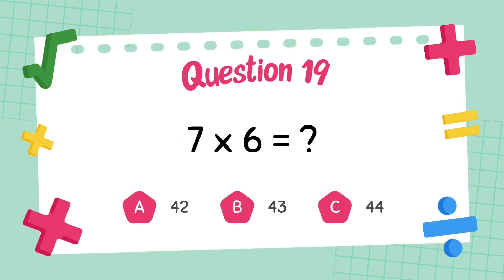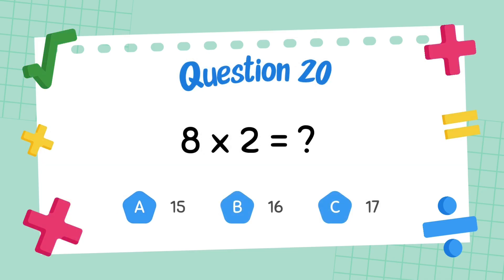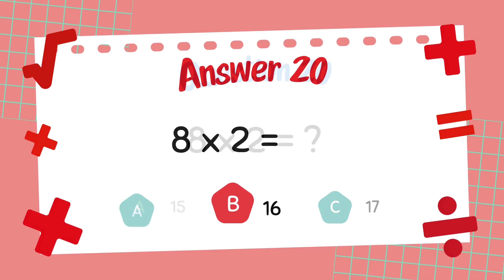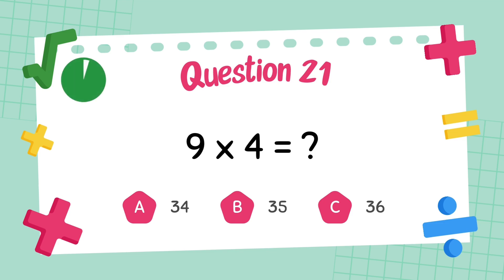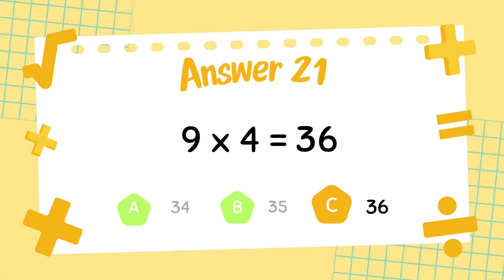What is seven multiply six? The answer is forty-two. What is eight multiply two? The answer is sixty-six. What is nine multiply four? The answer is thirty-six.